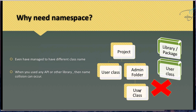You can create a new folder and put your class in it, but that still has problems. If you use a third-party package or library that has the same class name as yours — for example, the 'User' class is very common and nearly everyone has it — then you'll have a clash. How will you distinguish whether the User class is from the library, from the admin folder, or from your base folder?